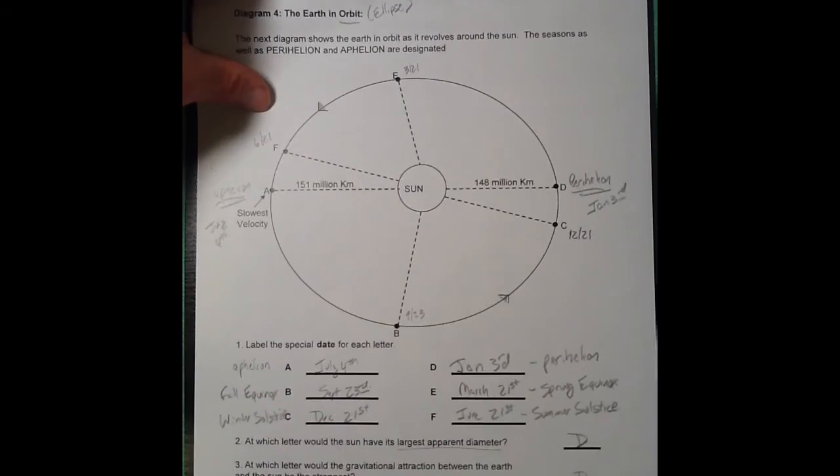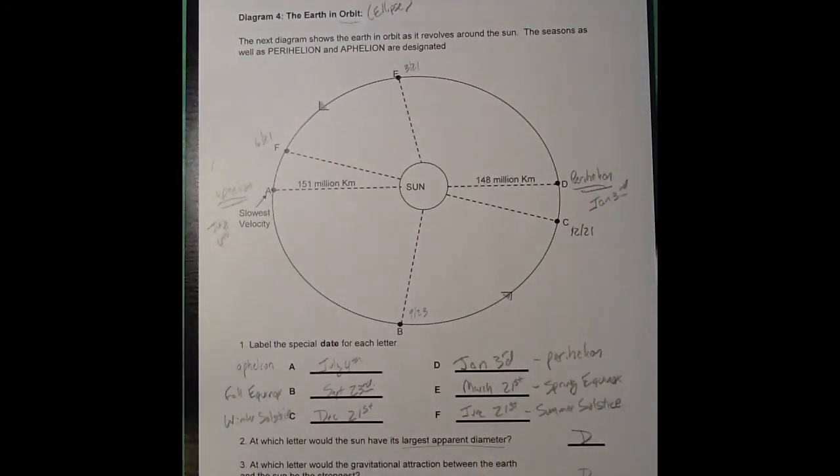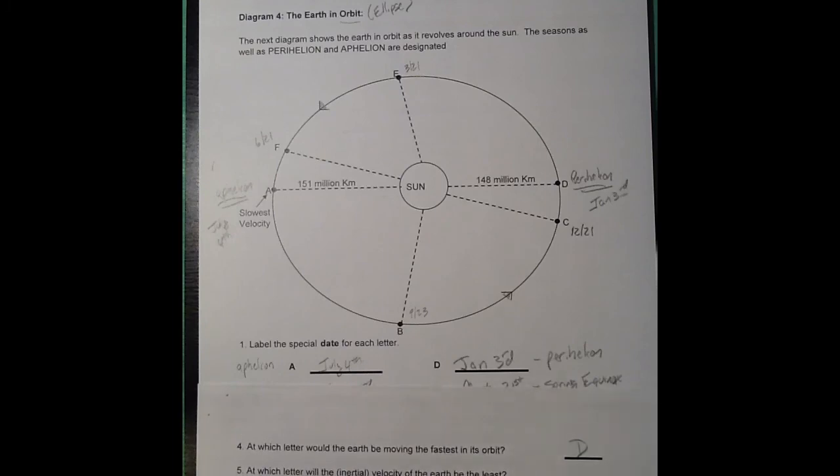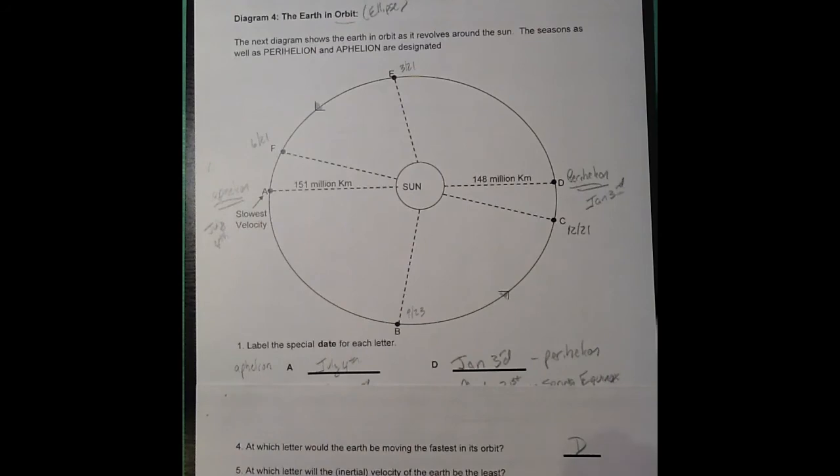We've got four more questions to deal with this diagram. Where would be moving fastest? Obviously, where you have the strongest pole is D, so that's where you'd be moving fastest. Where would the velocity be the least? Well, give me a break, it's labeled on the diagram, so the slowest velocity is at A.